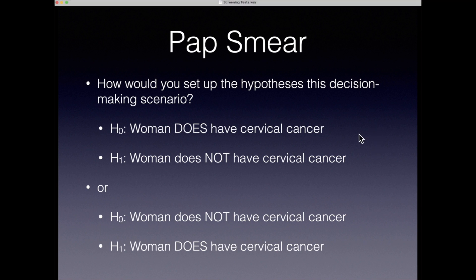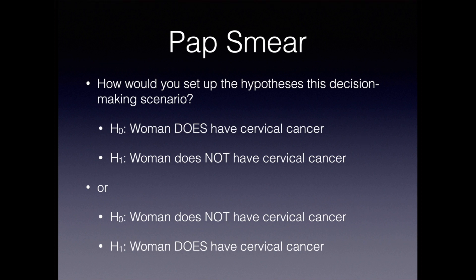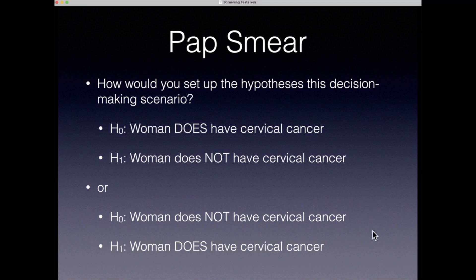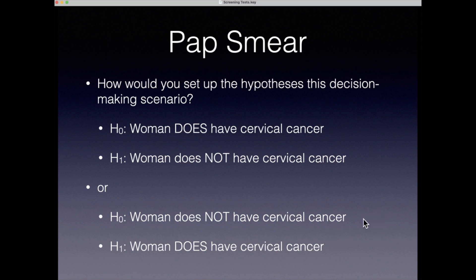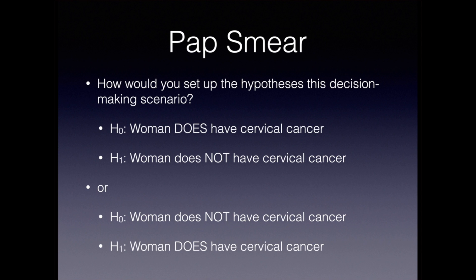With this first setup, the physician is assuming the patient who walks into the office does have cervical cancer and will let the data through the screening test try to convince him or her otherwise. The other way of setting this up would be that the null hypothesis is that the woman does not have cervical cancer, and the alternative is that she does — the physician assumes she does not have cancer, then lets the screening test guide decision-making.